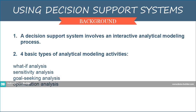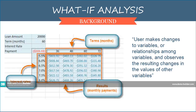Decision Support System, or DSS, involves an interactive modeling process. Four basic types of analytical modeling activities are What-if analysis, sensitivity analysis, goal-seeking analysis, and optimization analysis. In What-if analysis, the user makes changes to variables or relationships among variables and observes the resulting changes in the values of other variables.